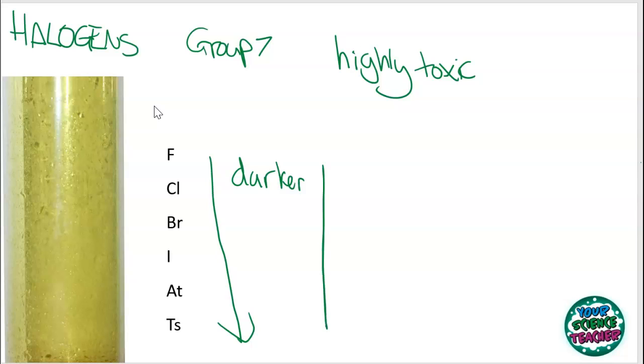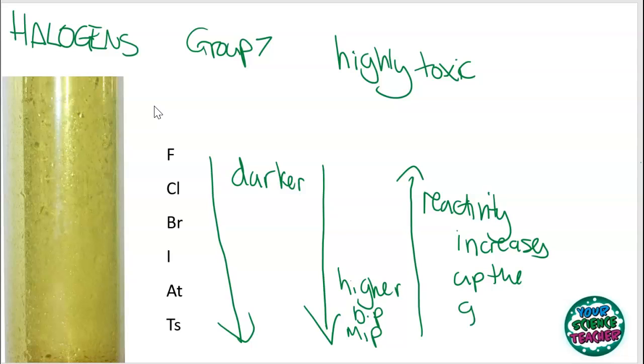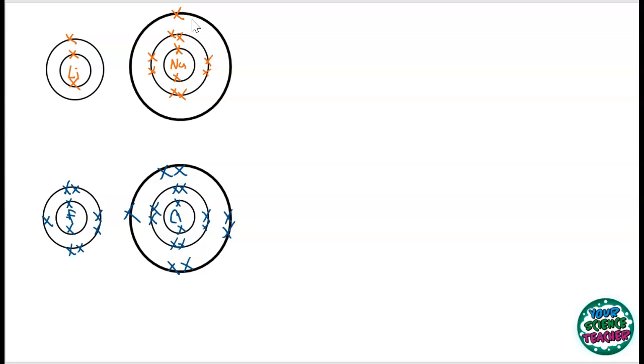You might have also heard that they get higher boiling point and melting point as well down the group. And you can kind of tell that by when I said like bromine is a liquid and iodine is a solid, that the boiling point and melting point must be increasing down the group. Now, there's another observation that's different to group one. And that's the fact that the reactivity decreases down group seven.